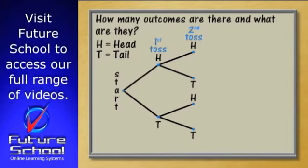So, how many outcomes are there and what are they? Well I hope you can see that there are actually four outcomes, not three. And we can now list them by following the branches in our tree diagram.